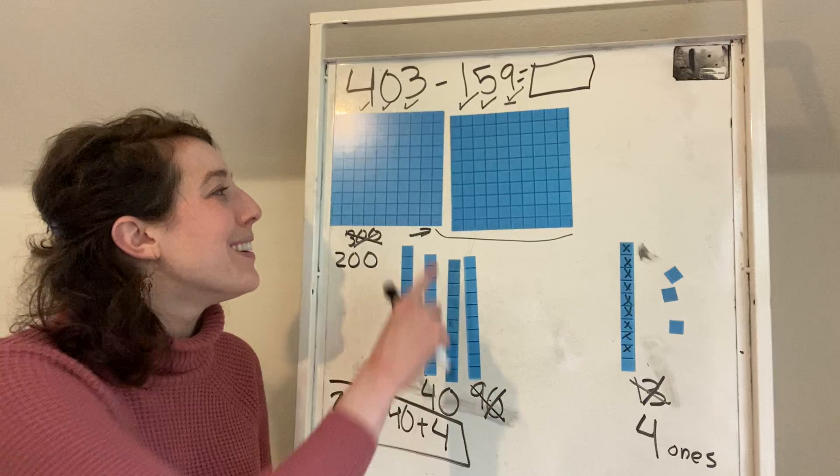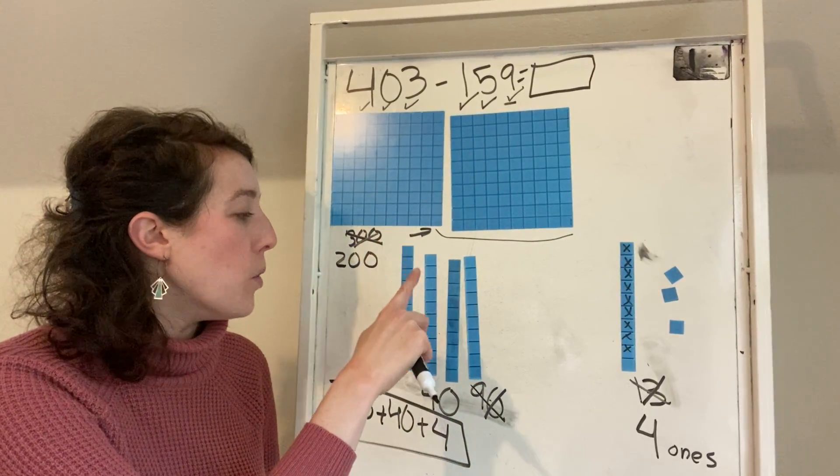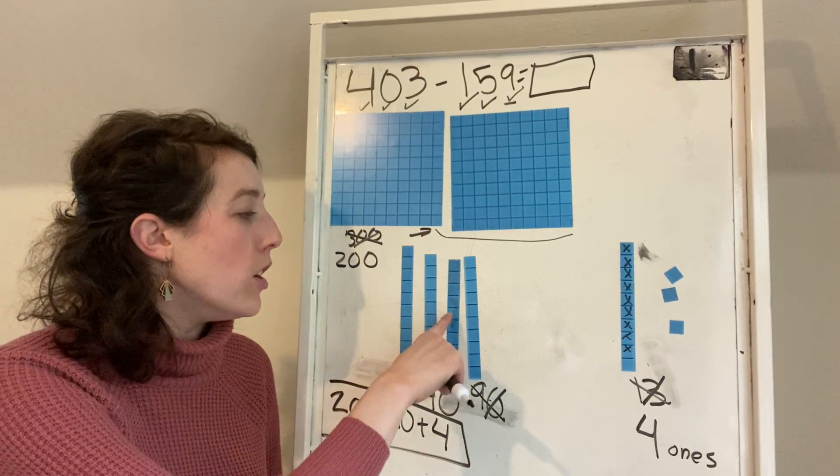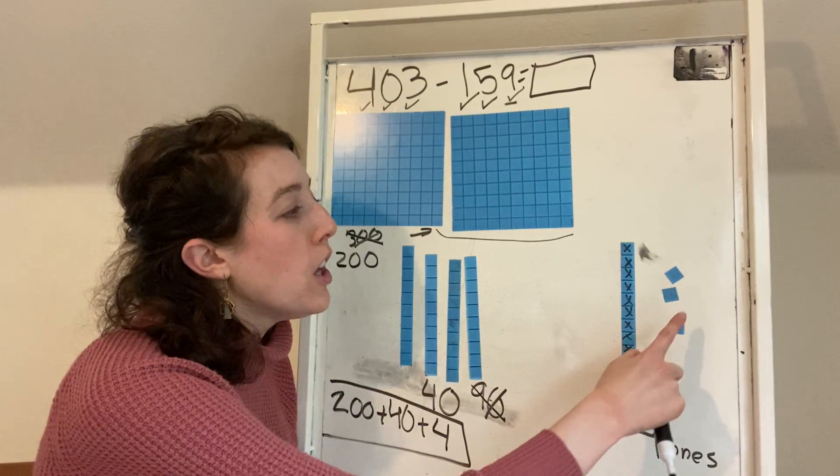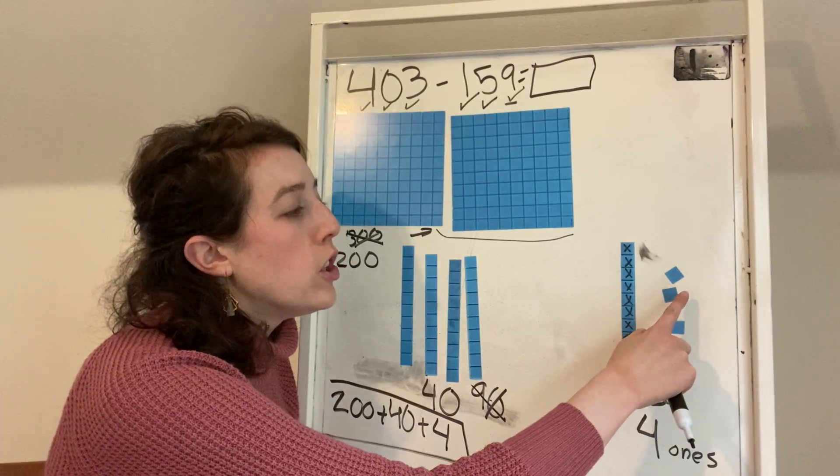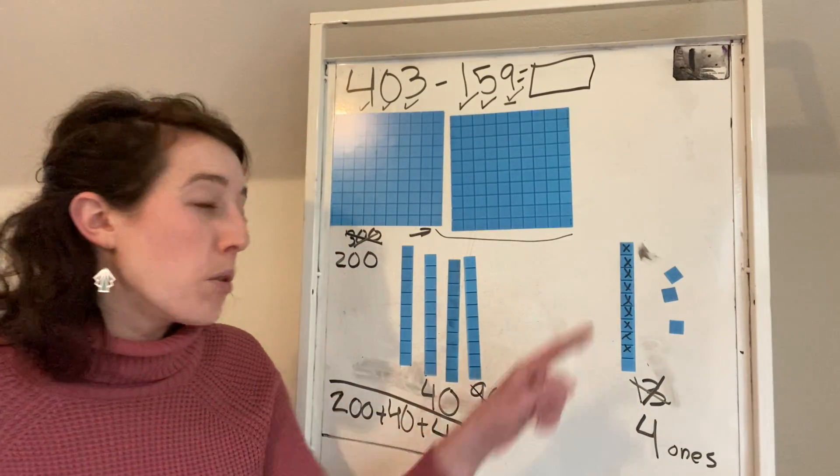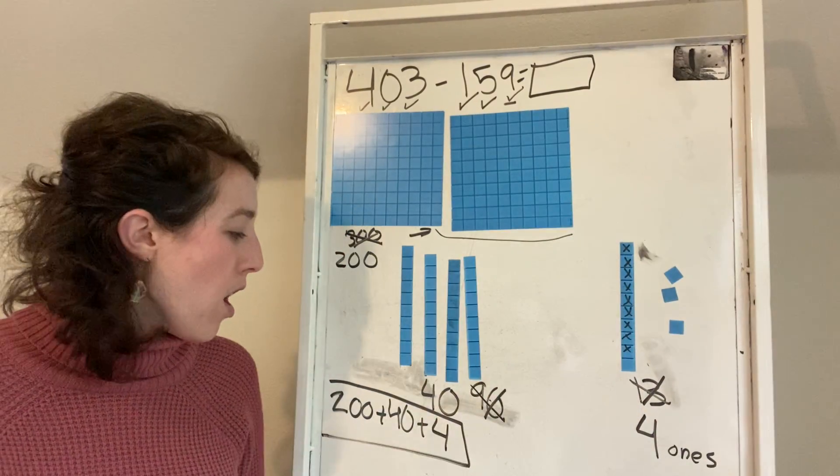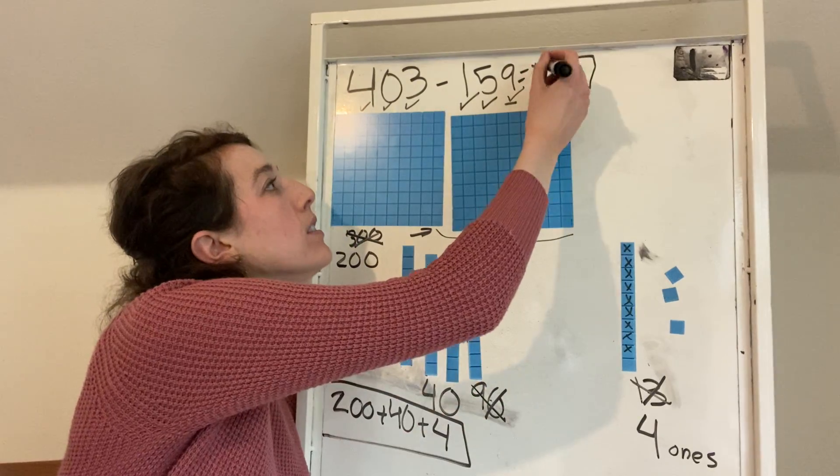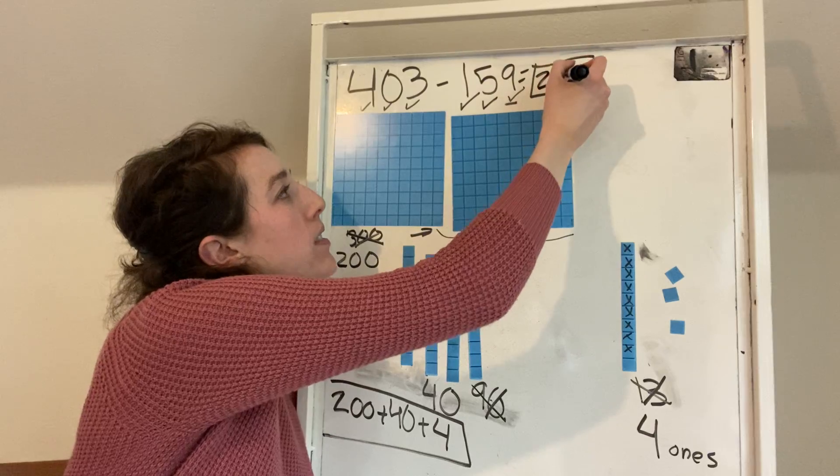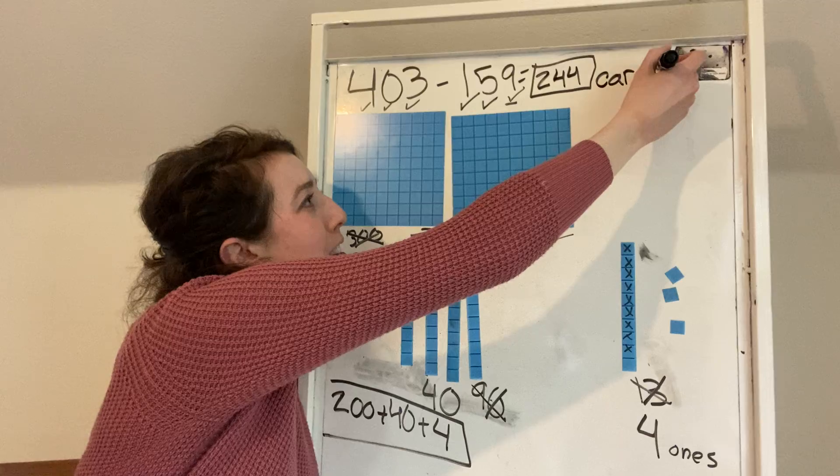Count with me. 100, 200, 210, 220, 230, 240, 241, 242, 243, 244. Because remember, I xed those off. I have 244 carrots left. And I'm even going to write the word carrots because that's what good mathematicians do.